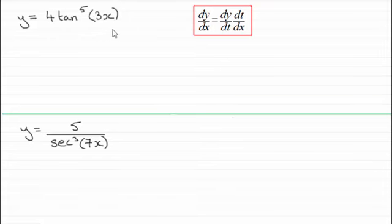What I've got here is a couple more examples which are based on the power of tangent and in this example based on the power of sec. We've got in the first one y equals 4 tan to the power 5 of 3x and y equals 5 all divided by sec cubed of 7x.